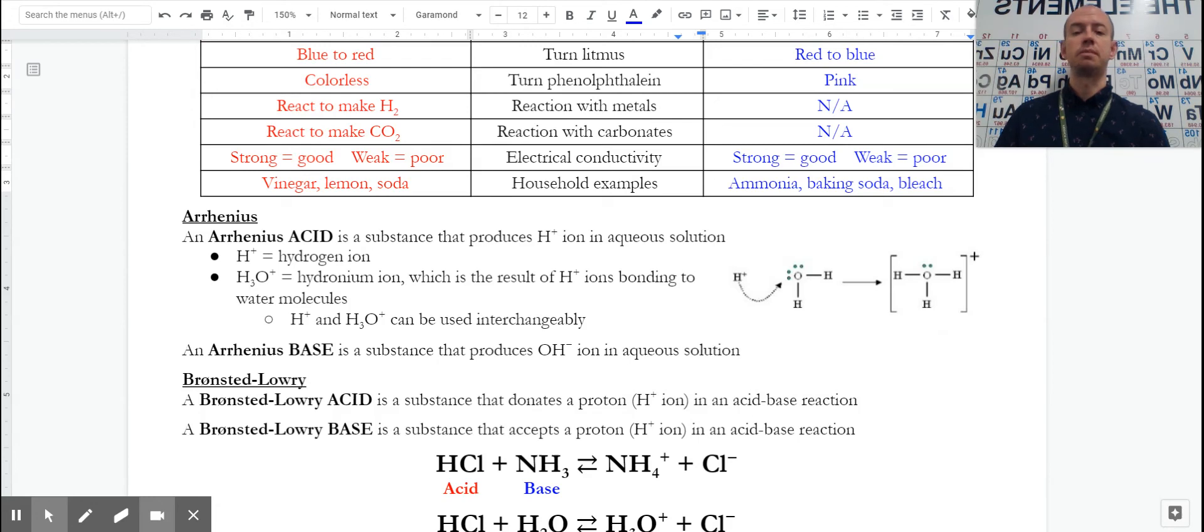An Arrhenius base is a substance that produces hydroxide. So this would be a lot of our metals just bonded to the hydroxide, sodium hydroxide, calcium hydroxide, lead hydroxide. They ionize, they dissociate either completely or partially depending on solubility, and they make that hydroxide.